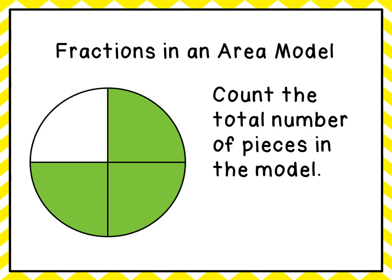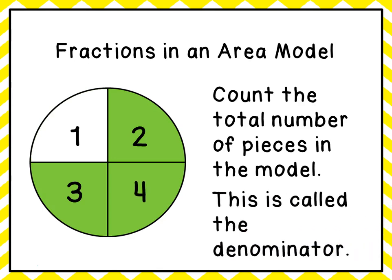So the first thing that we want to do is count the total number of pieces in the model. So you can see we have one, two, three, four. That number is called the denominator. It goes on the bottom. The denominator tells us how many pieces we have all together.